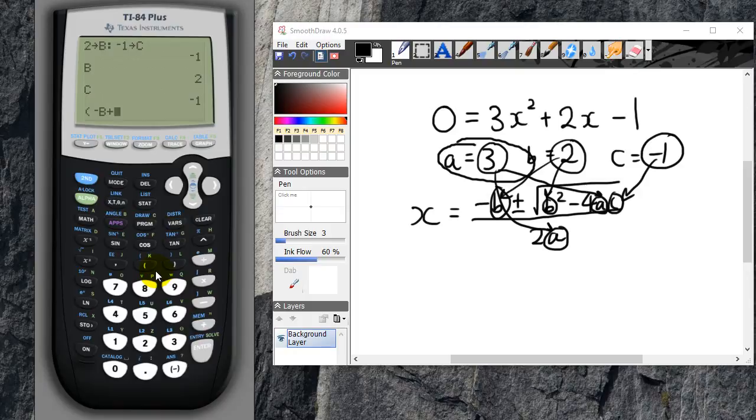Then let's do square root, which is second x squared, square root of bracket b squared, alpha b squared, minus 4ac. Close the bracket. Now this bracket you're closing belongs to this one.